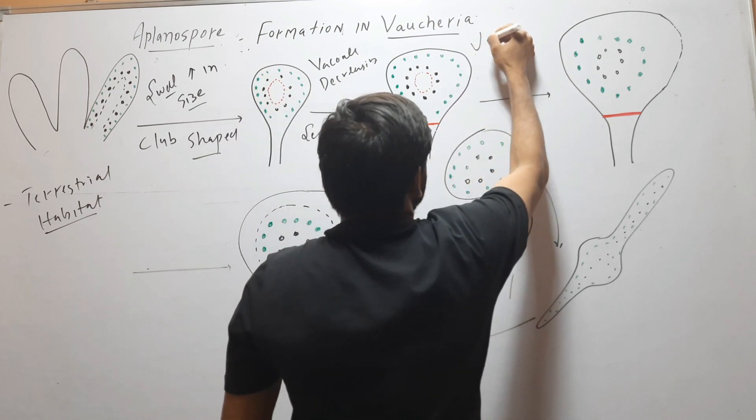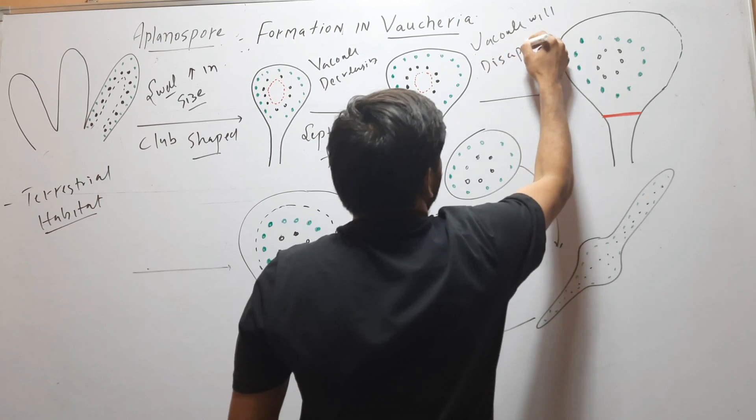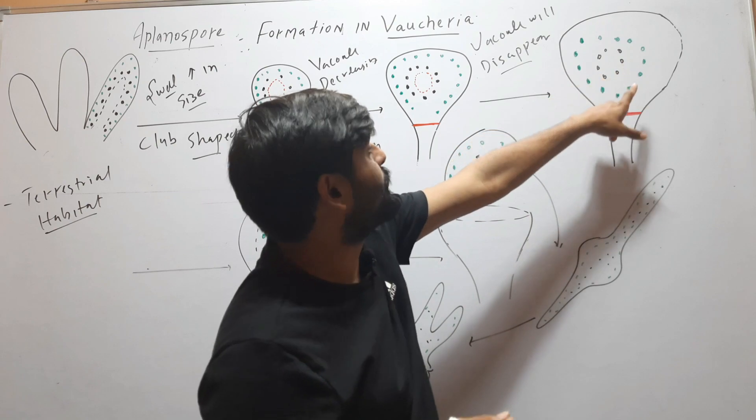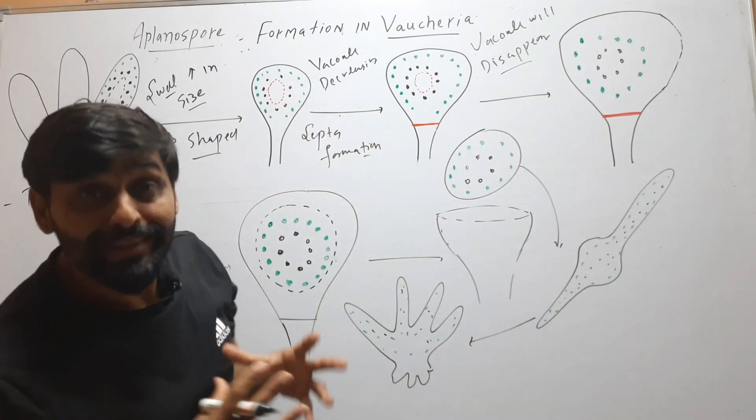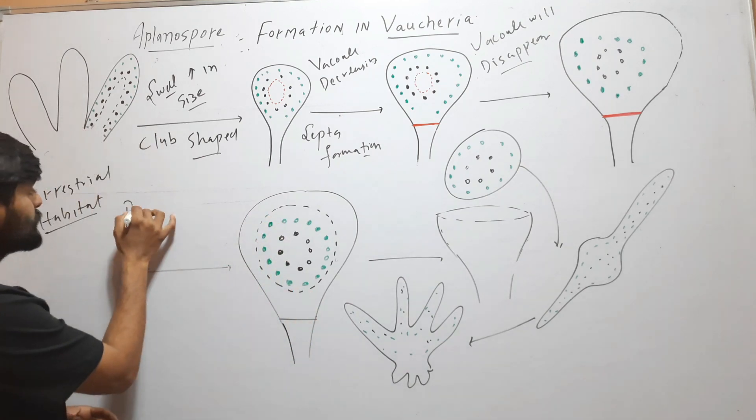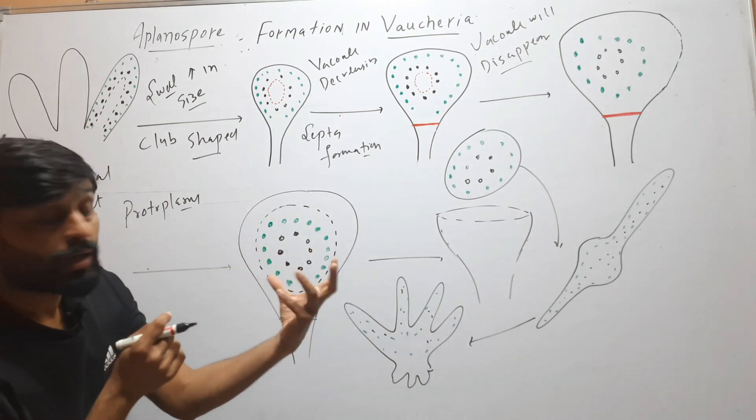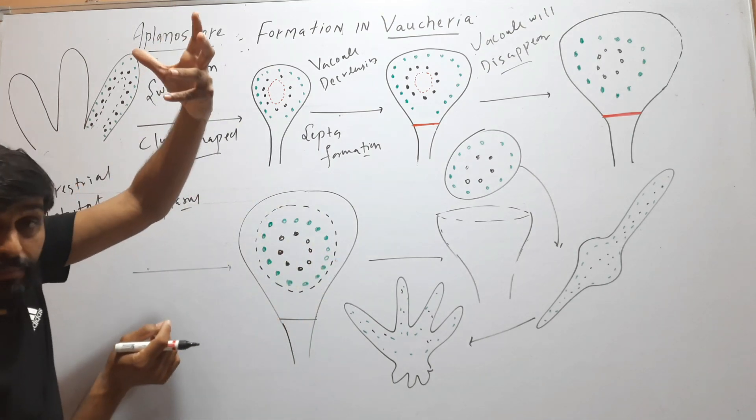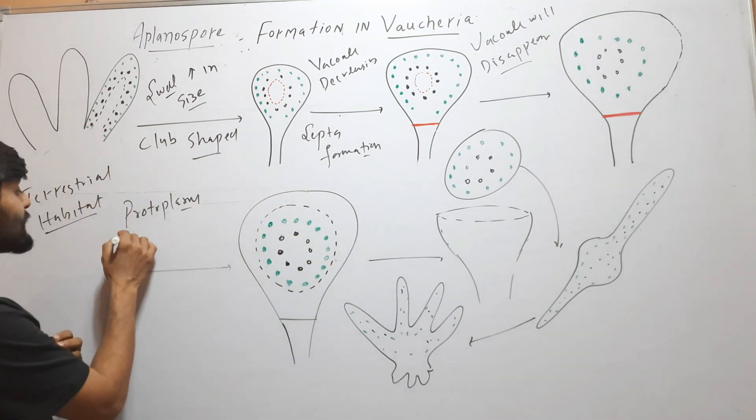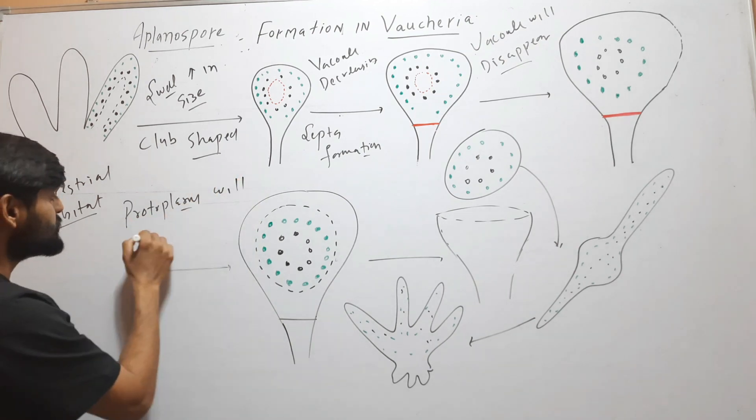Coming to the next step, here this vacuole will disappear. After disappearance of the vacuole, the protoplasm of this club-shaped filament, the upper part, will start constriction or will constrict.